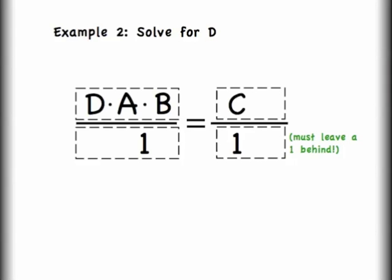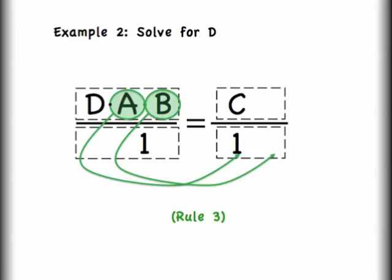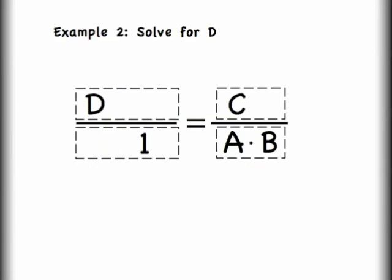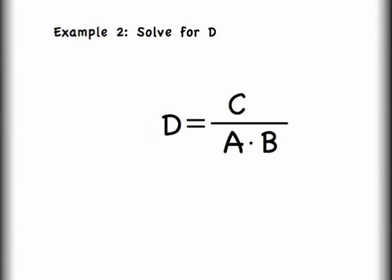Now that I have my three variables D, A, and B up in the top left, I'm going to isolate the D by removing the A and B. Again using rule three, I'm going to move them into the denominator on the right-hand side. Then I can look at this equation and simplify the left-hand side so that it just shows that D is equal to C divided by A times B.